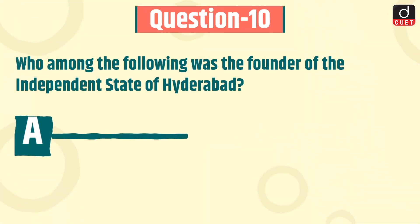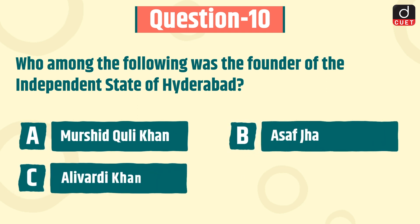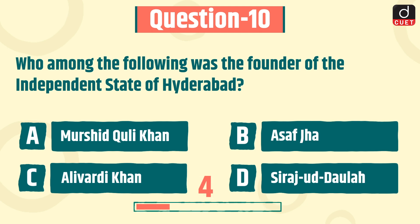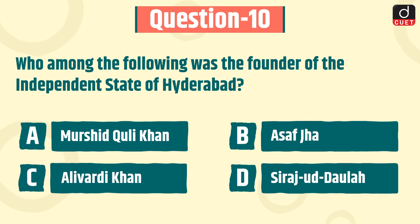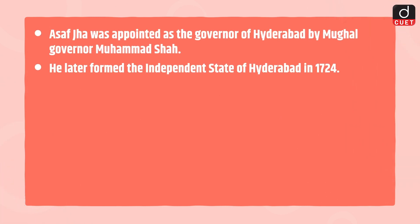The last question is: who among the following was the founder of the independent state of Hyderabad? Murshid Quli Khan, Asaf Jah, Ali Vardi Khan, or Siraj ud-Daula? The correct answer is option A, Asaf Jah. Asaf Jah was appointed as the governor of Hyderabad by Mughal emperor Muhammad Shah. He later formed the independent state of Hyderabad in 1724.